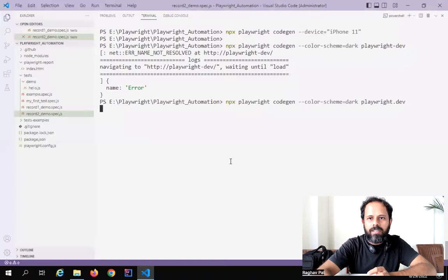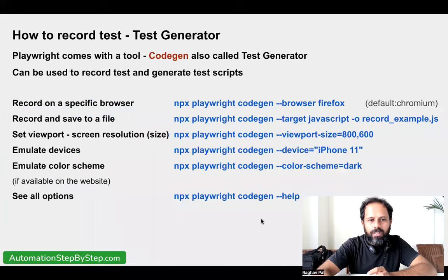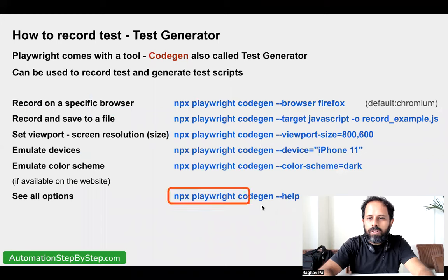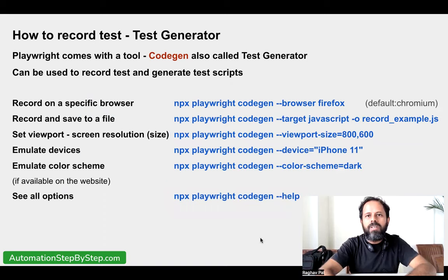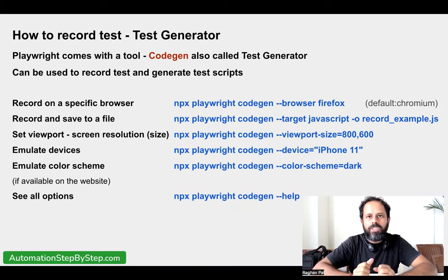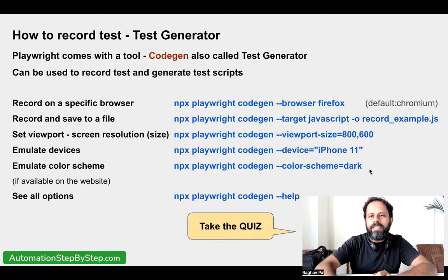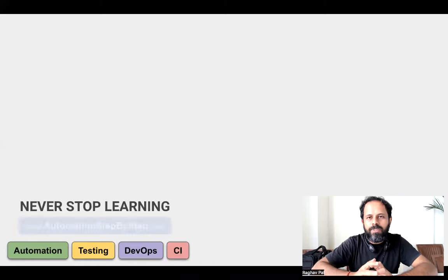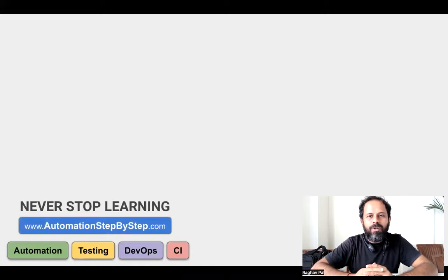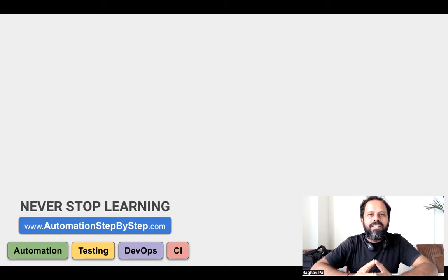It will show you all the options you can use with the `playwright codegen` command. Take a screenshot and keep it handy — watch it multiple times and you'll remember all these commands. You can also take the quiz — the link will be in the description of this video. If you have any questions, let me know. I hope this was very useful. I will see you in the next session. Thank you for watching, and as I always say — never stop learning.